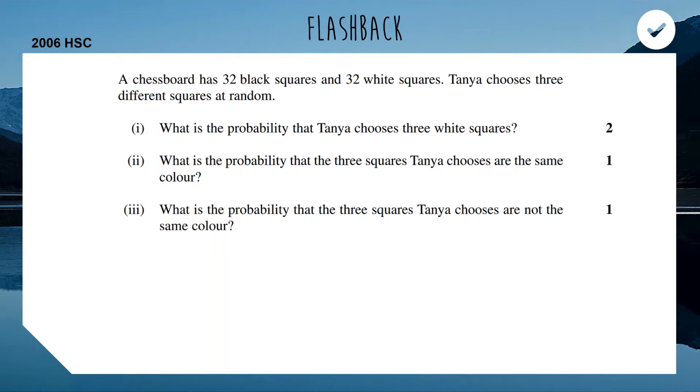We've got a chessboard with 32 black squares and 32 white squares. Tanya chooses three different squares at random. So once she's picked a square, she can't pick that square again. The first question for two marks is what is the probability that Tanya chooses three white squares?